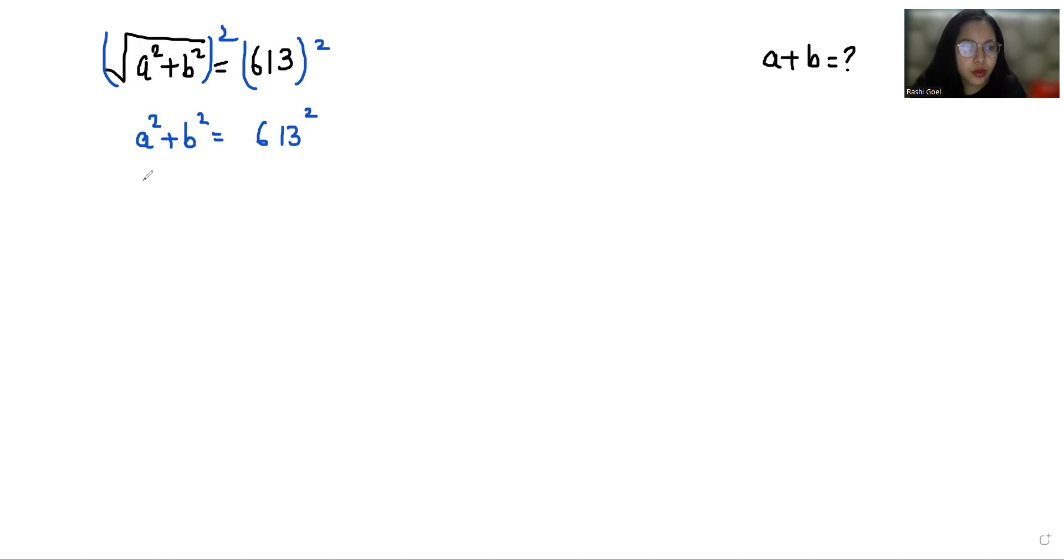Now I am going to use Pythagoras theorem. Let's say that p² + b² = h² where p is perpendicular, b is base, and h is hypotenuse.